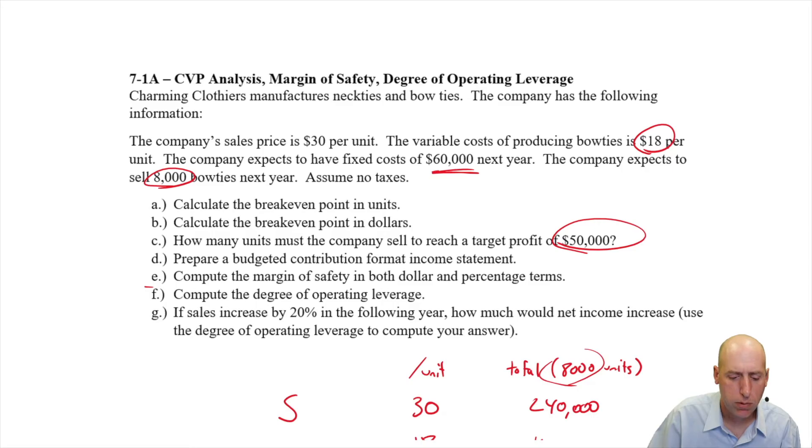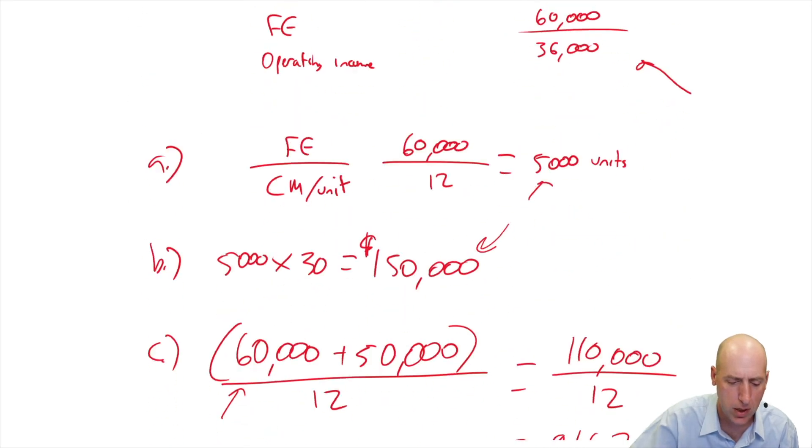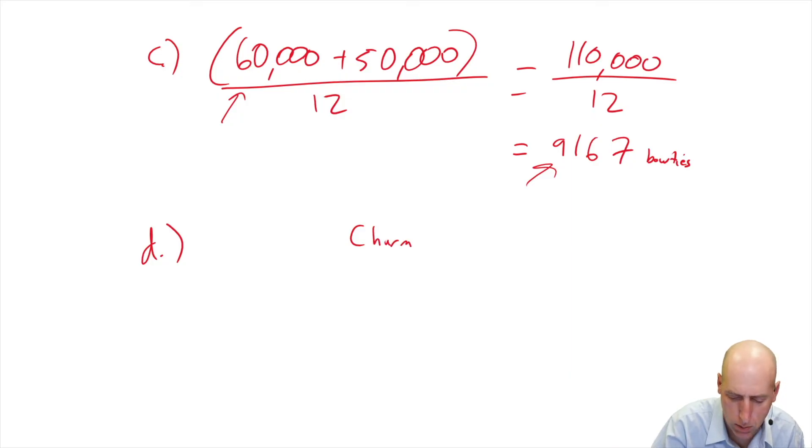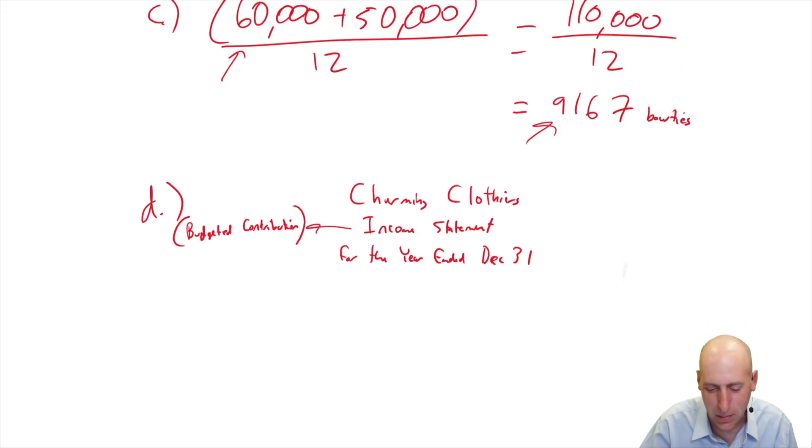D says, prepare a budgeted contribution format income statement. We kind of already did, right here. I'll do it in better form. So name of the company, Charming Clothiers, name of the statement, income statement. And then we give a year-end date and nothing's given in this question. So I'm just going to say for the year ended December 31st. And I might be wise to add a little bit to this title, budgeted contribution income statement. So I can add that budgeted contribution format income statement, something like this to indicate this isn't a standard income statement based on historical data. This is just the back of the napkin type of an income statement.